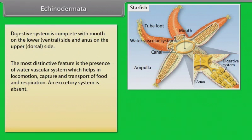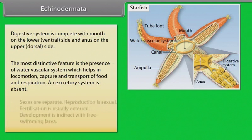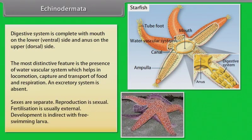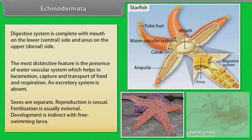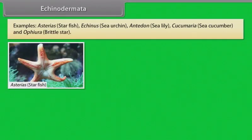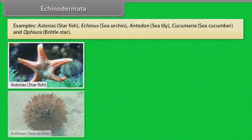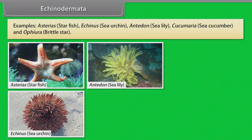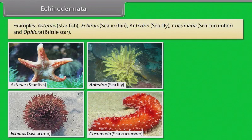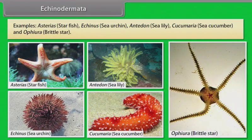An excretory system is absent. Sexes are separate and reproduction is sexual. Fertilization is usually external. Development is indirect with free-swimming larvae. Examples: Asterias (starfish), Echinus (sea urchin), Antedon (sea lily), Cucumaria (sea cucumber) and Ophiura (brittle star).